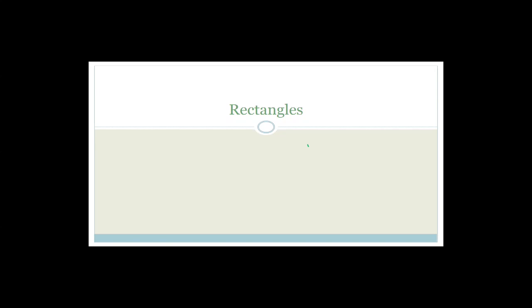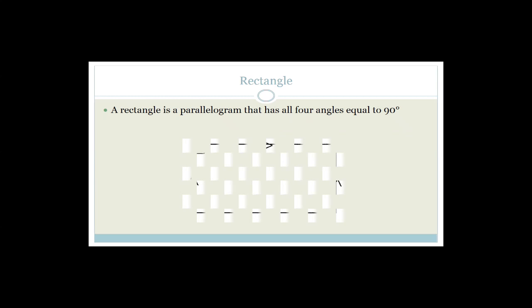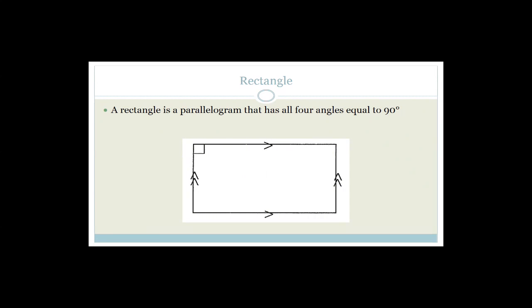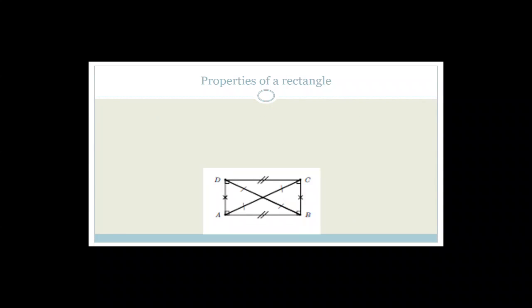We've done parallelograms and now we are going to look at rectangles. A rectangle is a parallelogram that has four equal angles — all four angles are equal to 90 degrees. So a rectangle is a parallelogram, but with all four angles equal to 90 degrees.